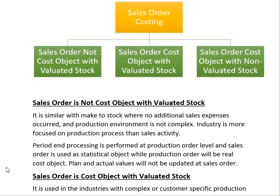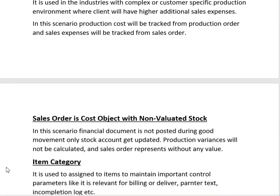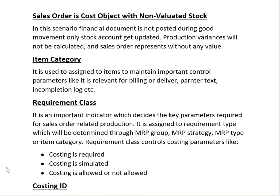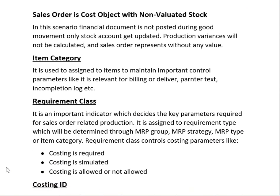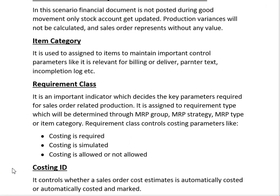Now let's look at the master data. The first element is the Item Category, which is a configuration object related to the Sales and Distribution module. When we input any item or material on a sale order, we assign the item category behind it. The item category controls parameters such as whether the product is relevant for billing or delivery.